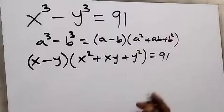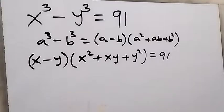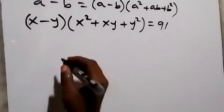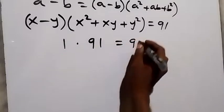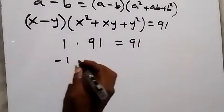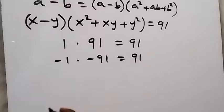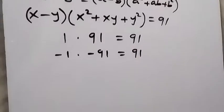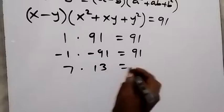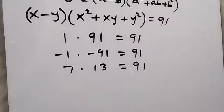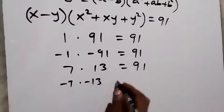Let's see the possible cases we have from here — two numbers that multiply to give us 91. So it's possible we have: 1 multiplied by 91, or minus 1 times minus 91, both giving 91. We might also have 7 multiplied by 13, which is 91, and equally minus 7 multiplied by minus 13, which is also 91.